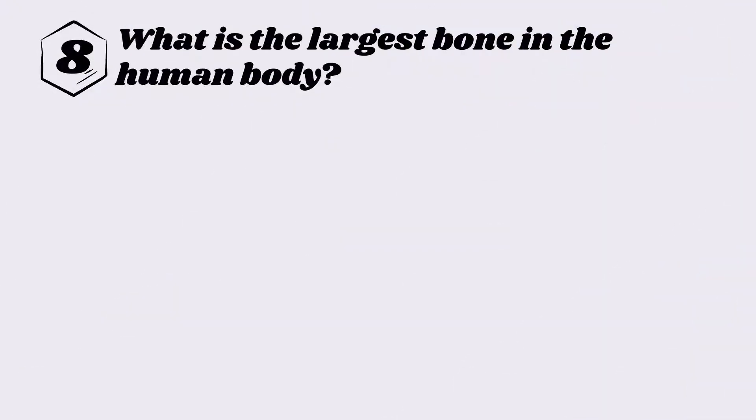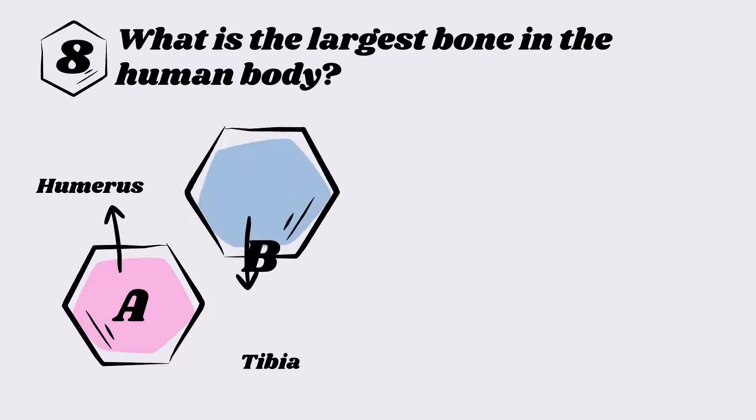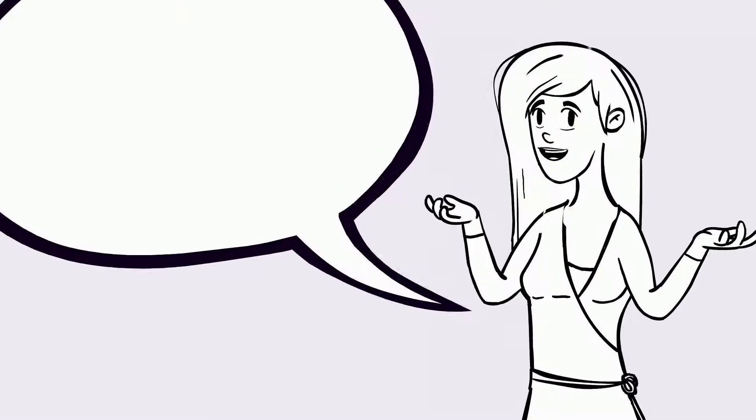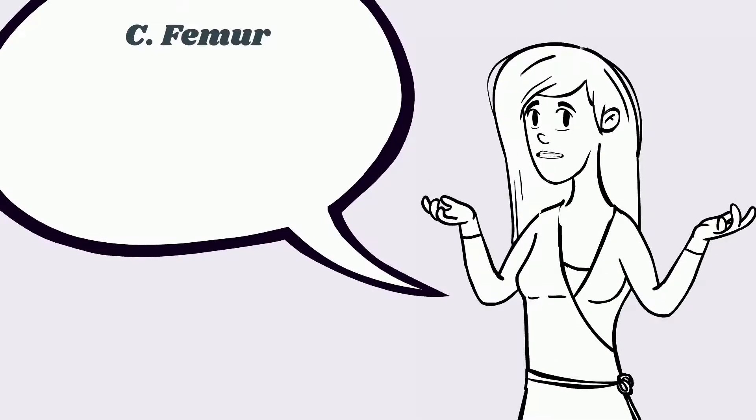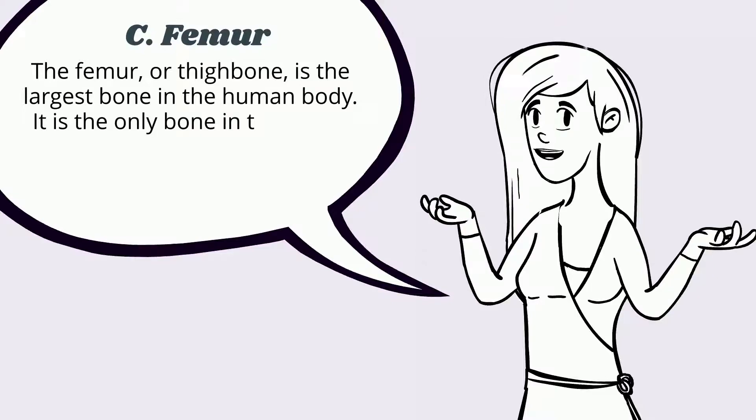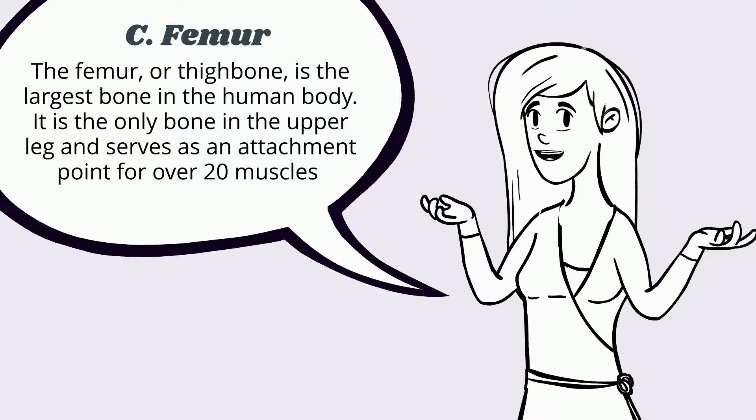Question eight: What is the largest bone in the human body? A) Humerus, B) Tibia, C) Femur, D) Sternum. The answer is C, femur. The femur, or thigh bone, is the largest bone in the human body. It is the only bone in the upper leg and serves as an attachment point for over 20 muscles.